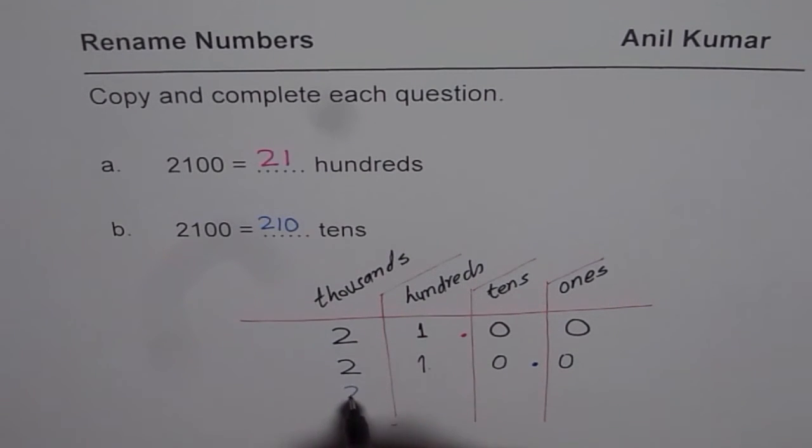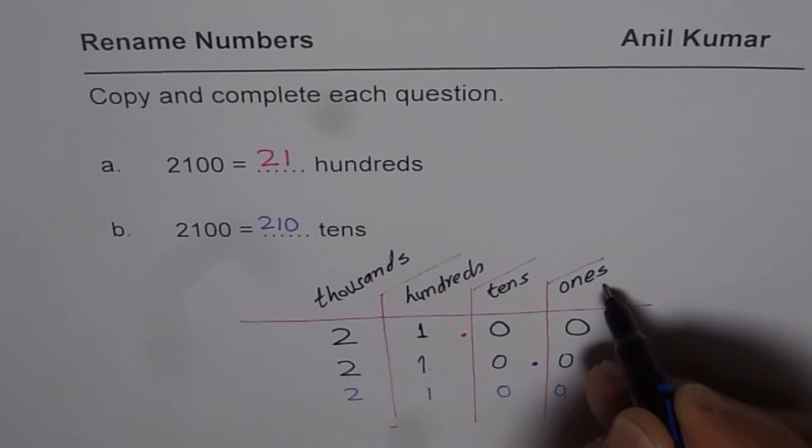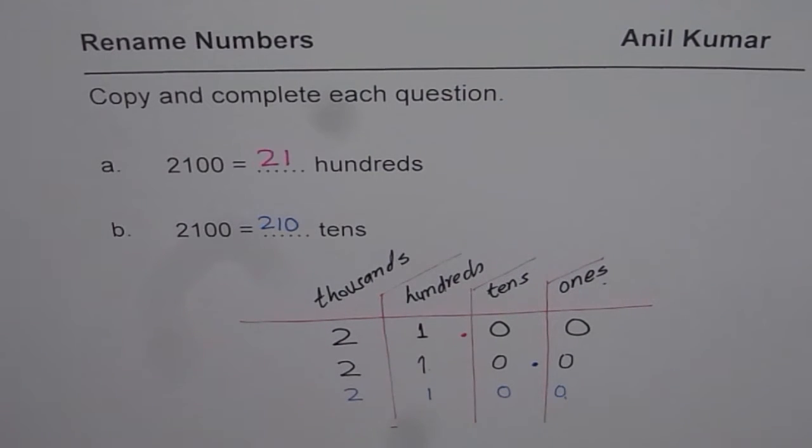So you could also write this as 2100 ones. And that is how you read the numbers. I hope this helps you to understand all the concepts which we have talked about to rename four digit numbers.